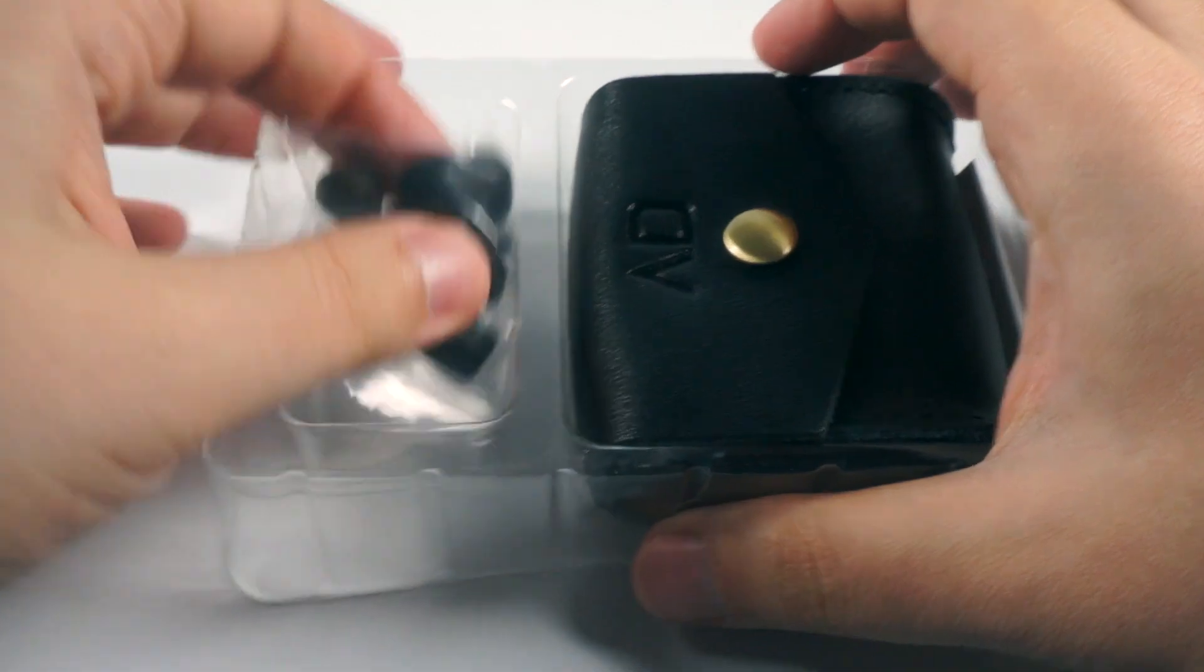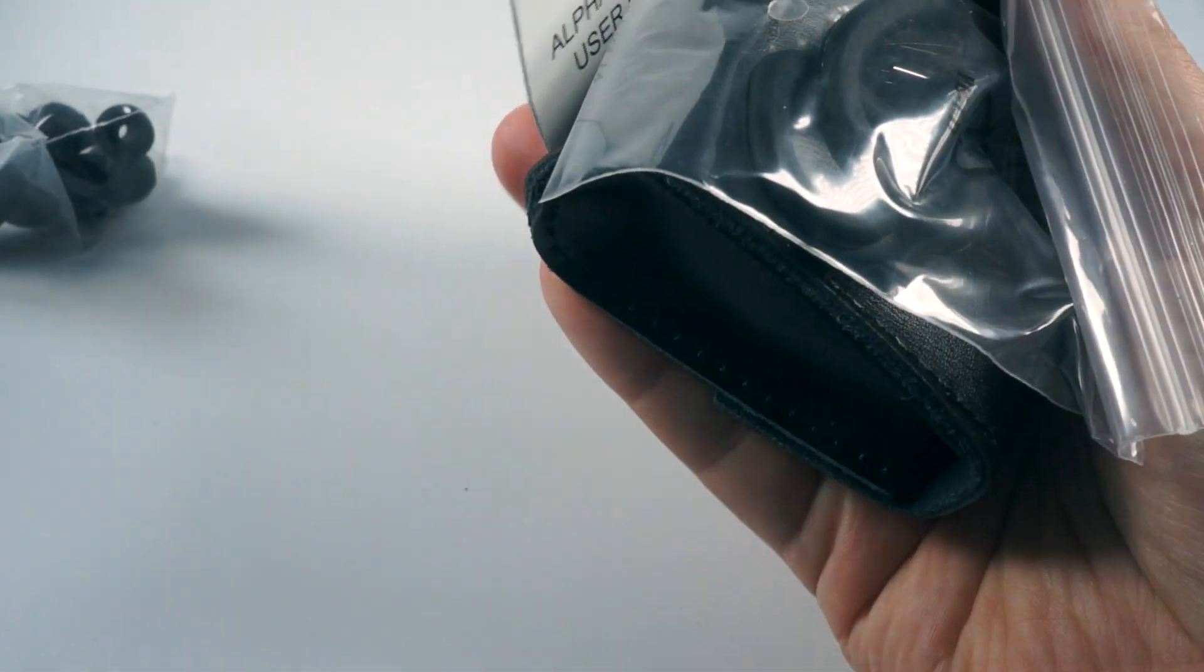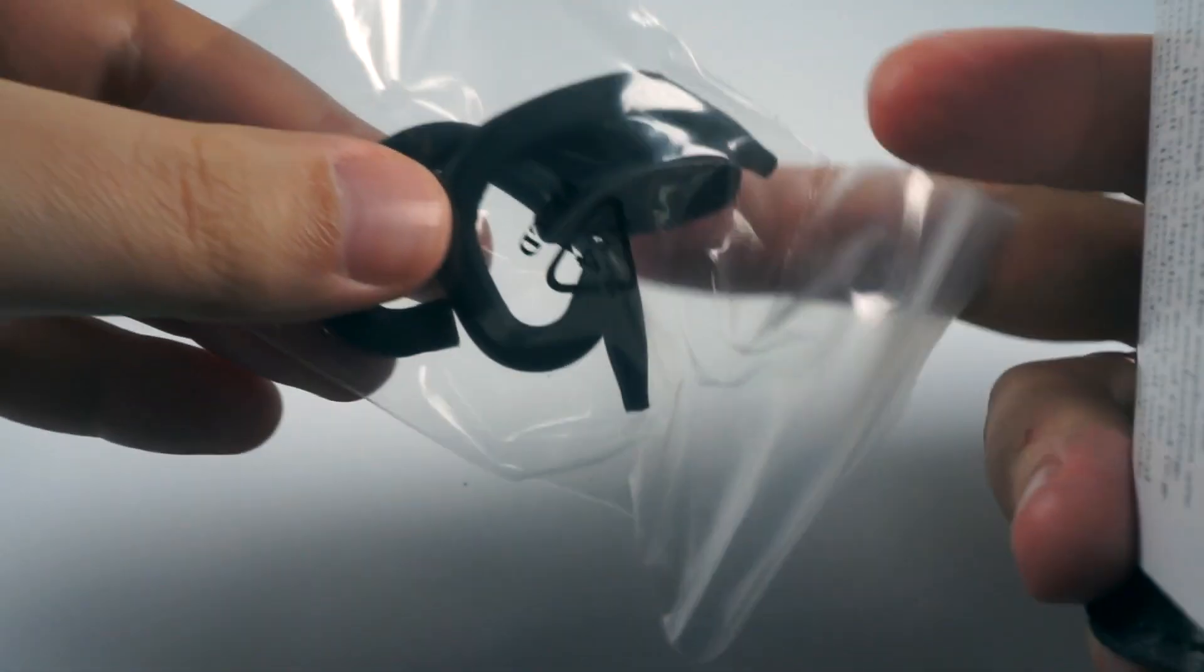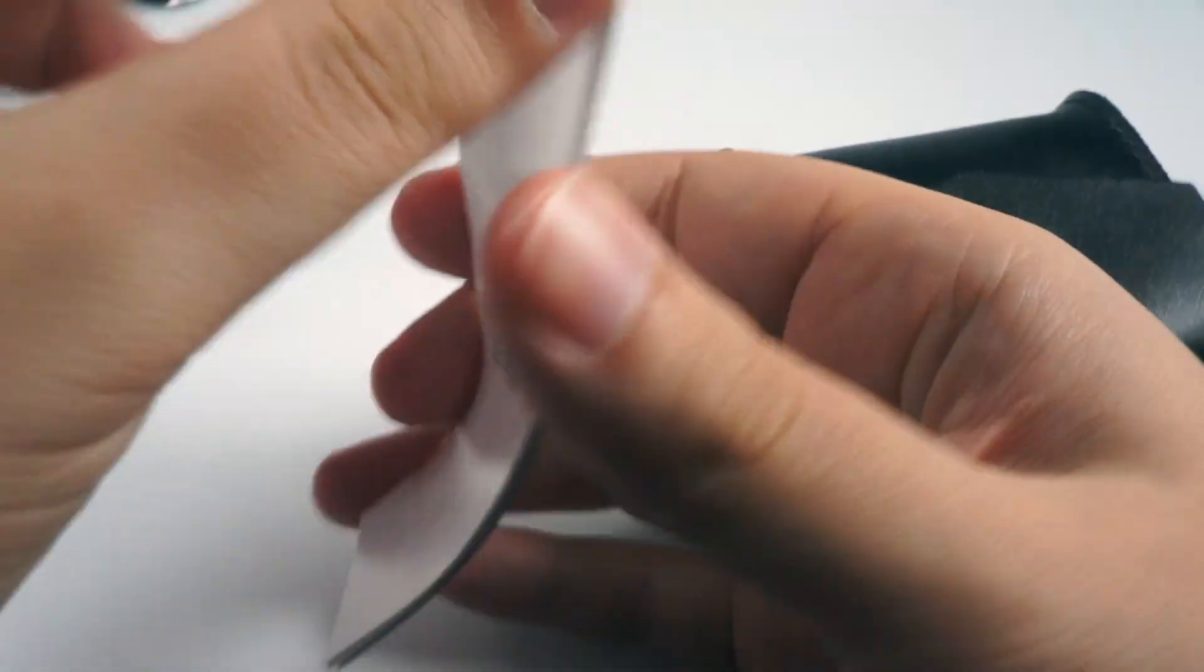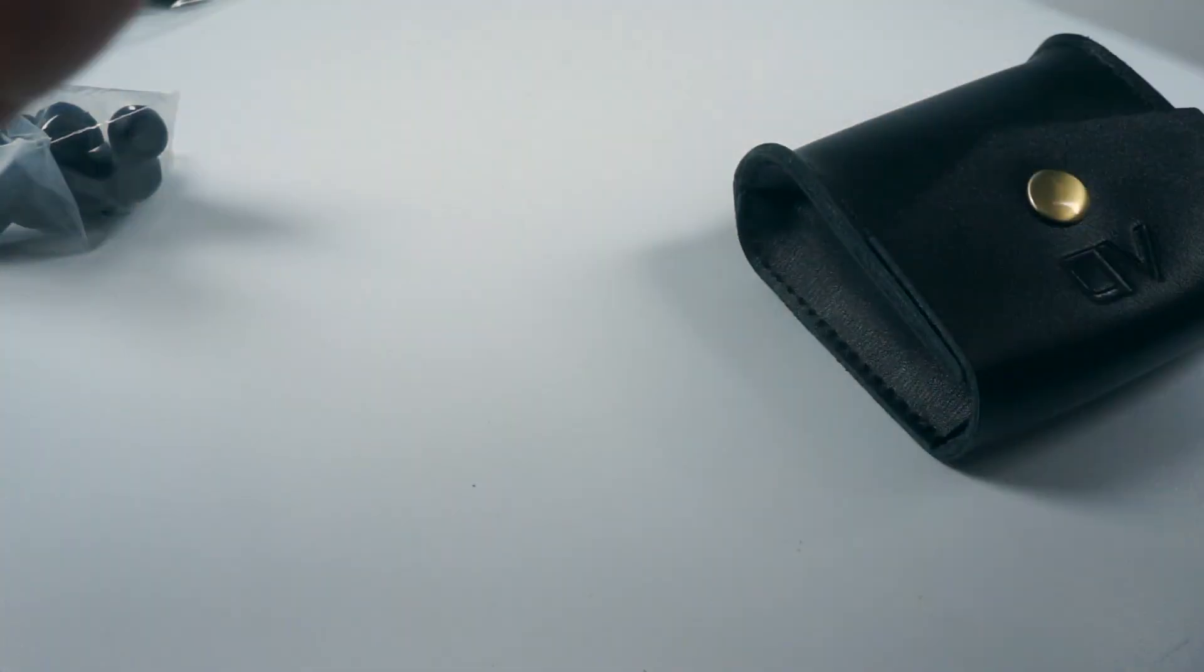Inside we'll have a set of tips, I will show it later, and a set of ear hooks, a shirt clip, and a small manual with warranty and specifications.